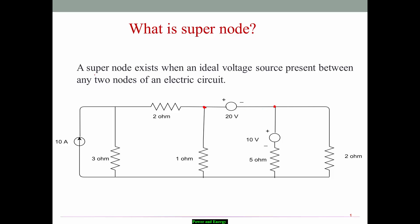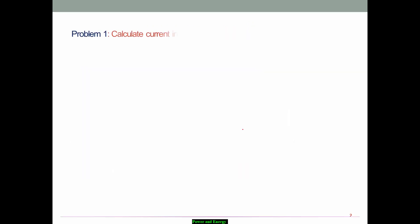According to the definition, a super node exists when an ideal voltage source is present between two different nodes. Let me give node numbers here: this is node number one, this is node number two, and this is node number three. So between node number two and three there is a voltage source. This type of problem cannot be simply solved by ordinary node analysis — instead it needs super node analysis.